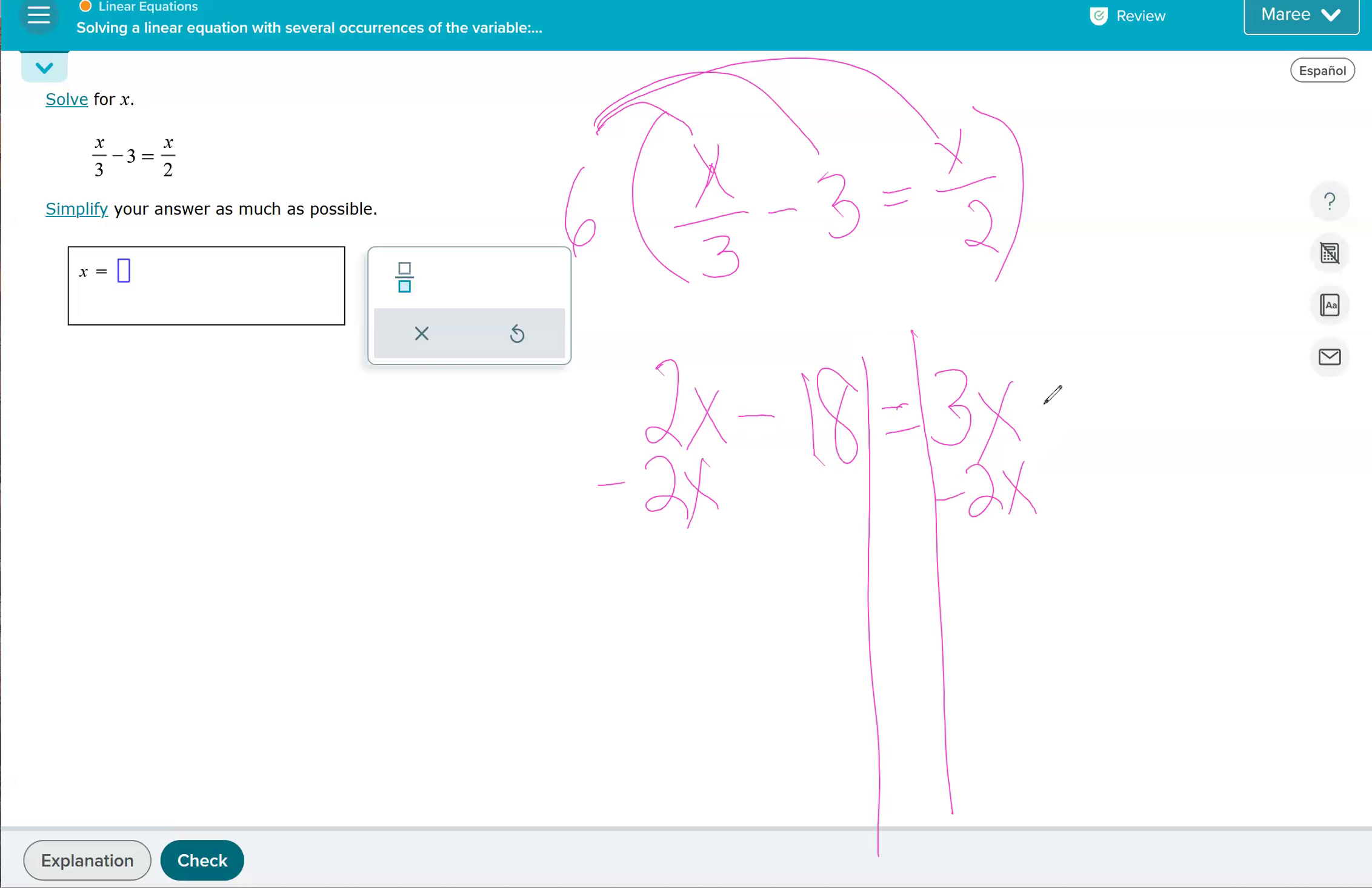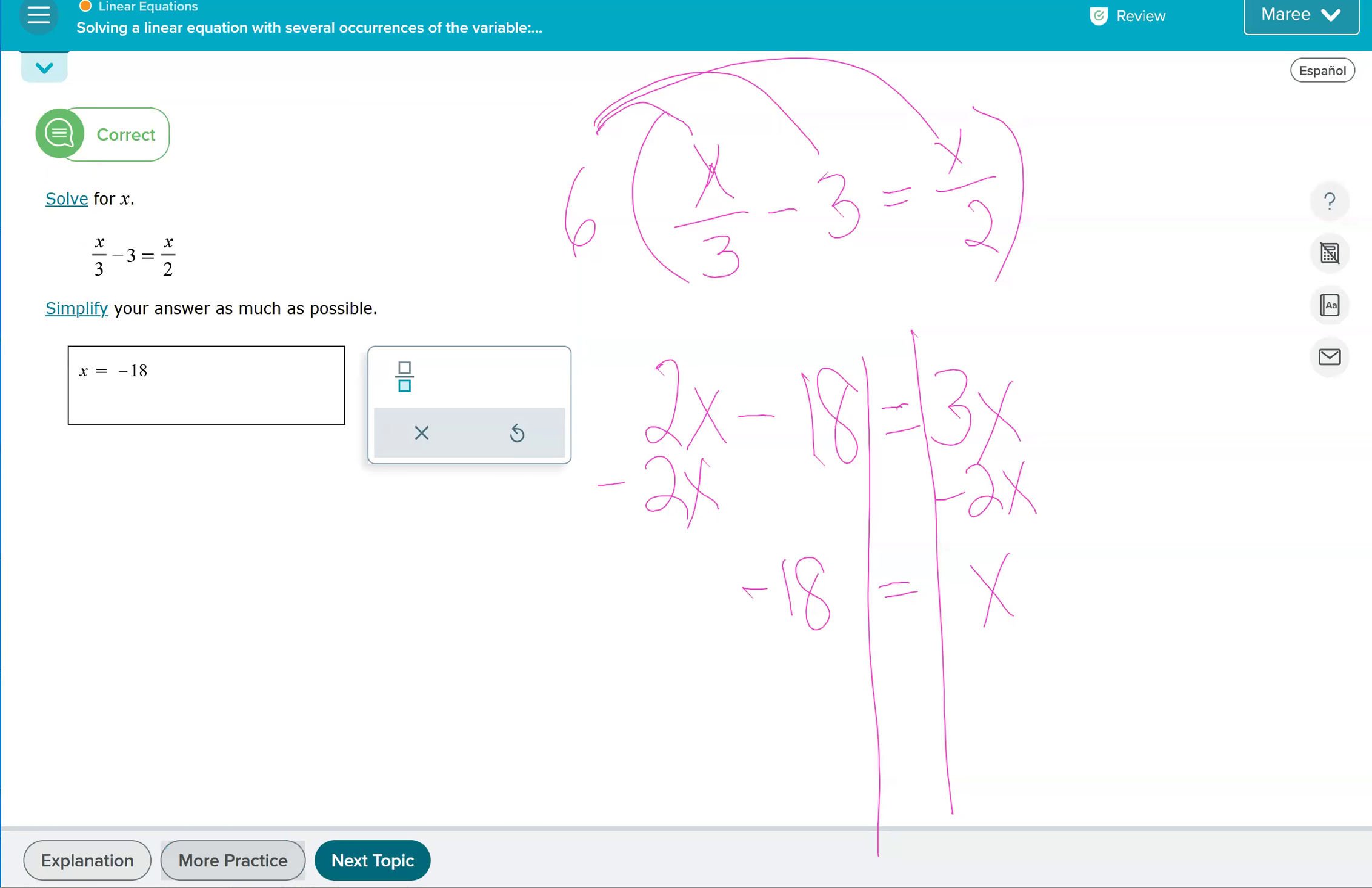You have to subtract that entire variable term in order to move it from one side to the other. We have left negative 18, and 3x minus 2x is x. So we're done. Our answer is negative 18. That worked out really well, doesn't always work out that way.